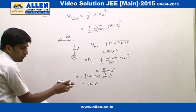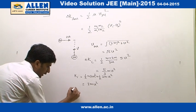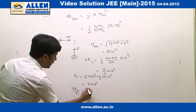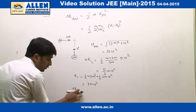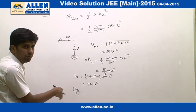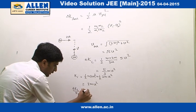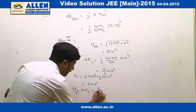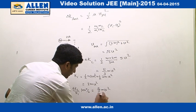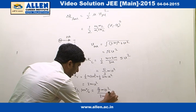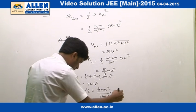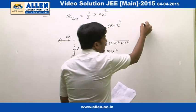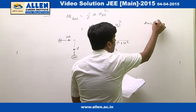Therefore, percentage loss in kinetic energy delta KL upon KI is given by into 100, we can say because we are finding here percentage change. Therefore, we have to multiply 100 to get the percentage change. Therefore, it is equal to 5 by 3 M V square divided by 3M V square into 100, which is equal to approximately 56 percent. Therefore, the correct answer is answer 1.